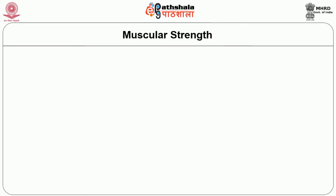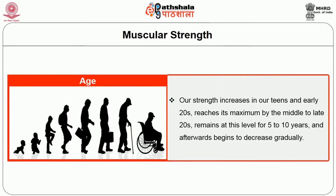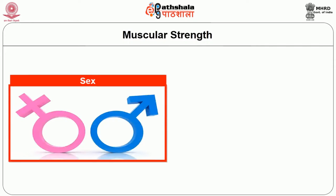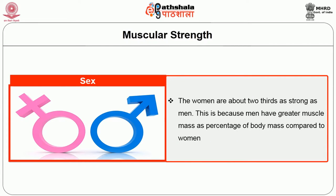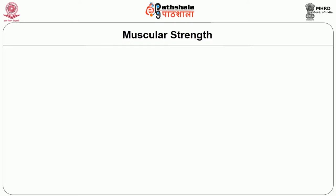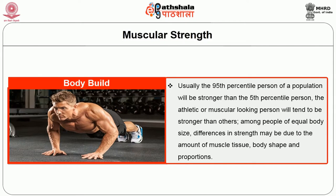For example, when standing we can exert more force pulling backwards than pushing forward. Several factors influence muscle strength and endurance. Age: strength increases in the teens and early twenties, reaches maximum by the mid-to-late twenties, remains at that level for five to ten years, then gradually decreases. Sex: women are generally about two-thirds as strong as men, because men have a greater muscle mass as a percentage of body mass. Body build: the 95th percentile of a population will be stronger than the 5th percentile; differences in strength may also be due to muscle tissue, body shape, and proportion.